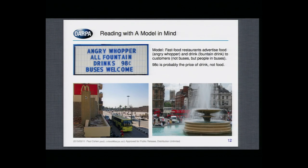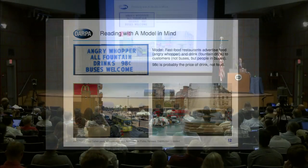The vast majority of reading systems do not read the way that you and I do. When you read something like 'Angry Whopper, all fountain drinks 98 cents, buses welcome,' you actually have something in mind. Humans read with context — you can call it a model. You see that sign and it evokes a fast food model. And it's not that the knowledge just pours into your head; you actually have to think about what's being said. Are buses really welcome? No — people on buses are welcome. The buses aren't going to eat anything. So when you process language, you do an enormous amount of inferential work with a model in mind.